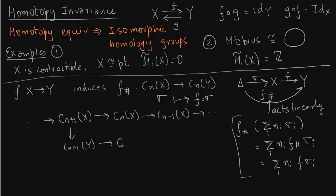We are drawing a map between two chain complexes. This map has been induced by a homotopy map f. We need to show that this diagram is commutative.